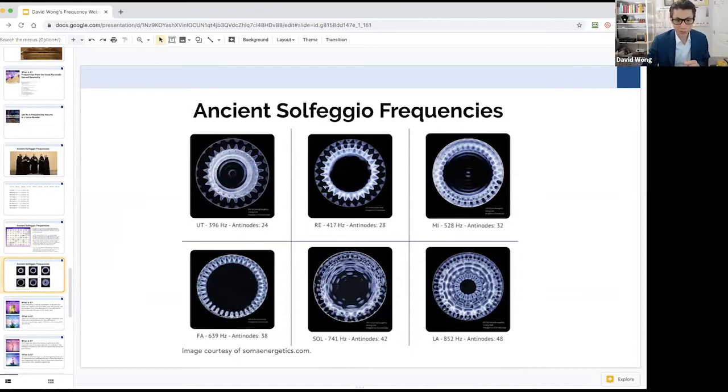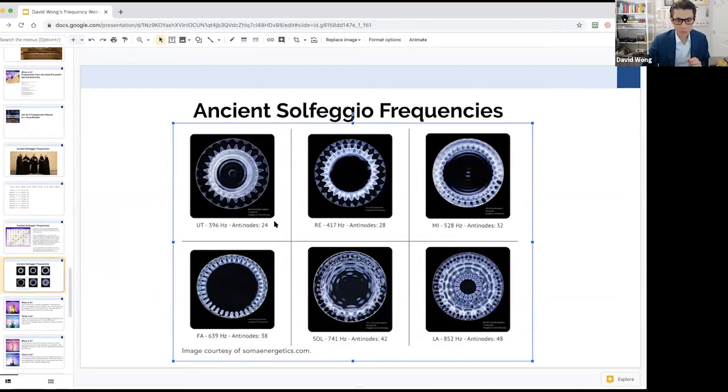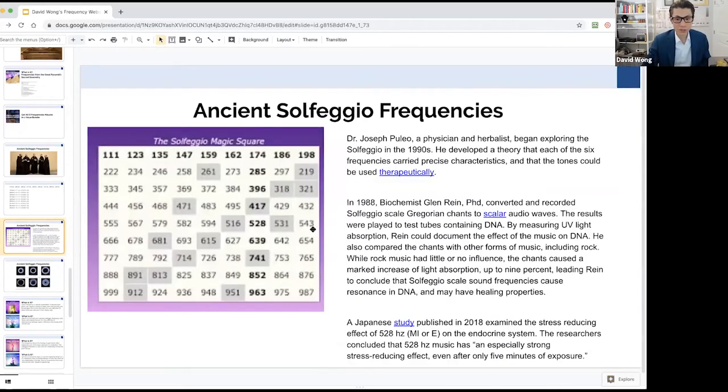These are cymatic photos of these frequencies. You can see that the number of nodes actually correspond to the solfeggio frequencies. So what's the significance of this?